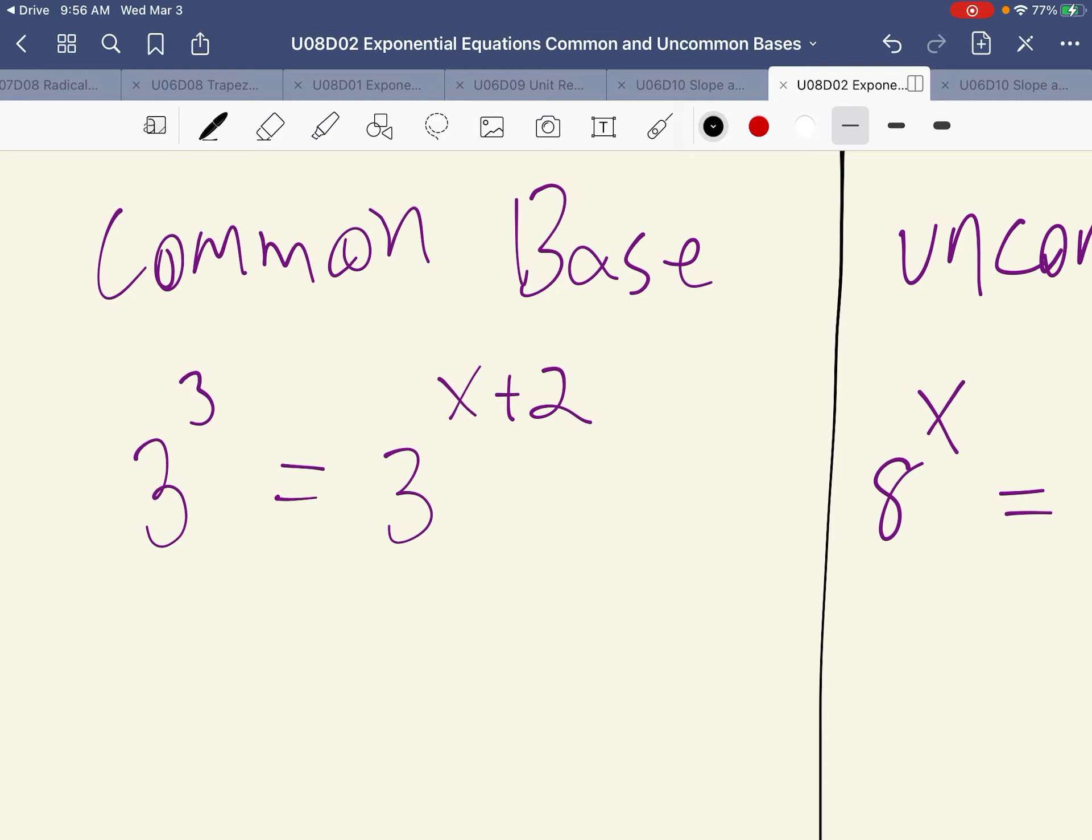We do have to check for extraneous solutions as well, but this is an example with a common base. You'll notice that they both share the base of 3, and the question is, what value will satisfy this equation so that we have the same outcome? Well, 3 to the 3rd is going to be 27, so we're looking for the appropriate value to plug in for x in order to make the exponents the same so that 3 to the same power will be the same thing.